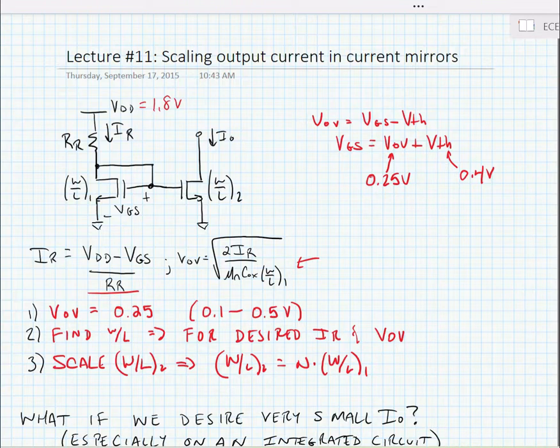Now, if we do this scaling, then the output current would be equal to N times the reference current. In other words, IO would be equal to N times IR.